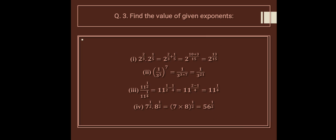11 raised to the power 1 upon 2, divided by 11 raised to the power 1 upon 4 — same base, different powers, so we subtract the powers: 1 upon 2 minus 1 upon 4 equals 1 upon 4. The answer is 11 raised to the power 1 upon 4.